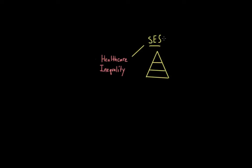I have SES written here, and that stands for socioeconomic status. If we think about social class, we can think about it in terms of a pyramid, where we have the highest income and educational levels at the top and the lowest at the bottom. As we go up this social pyramid, we see that access to healthcare gets better, and the quality of that healthcare also improves.